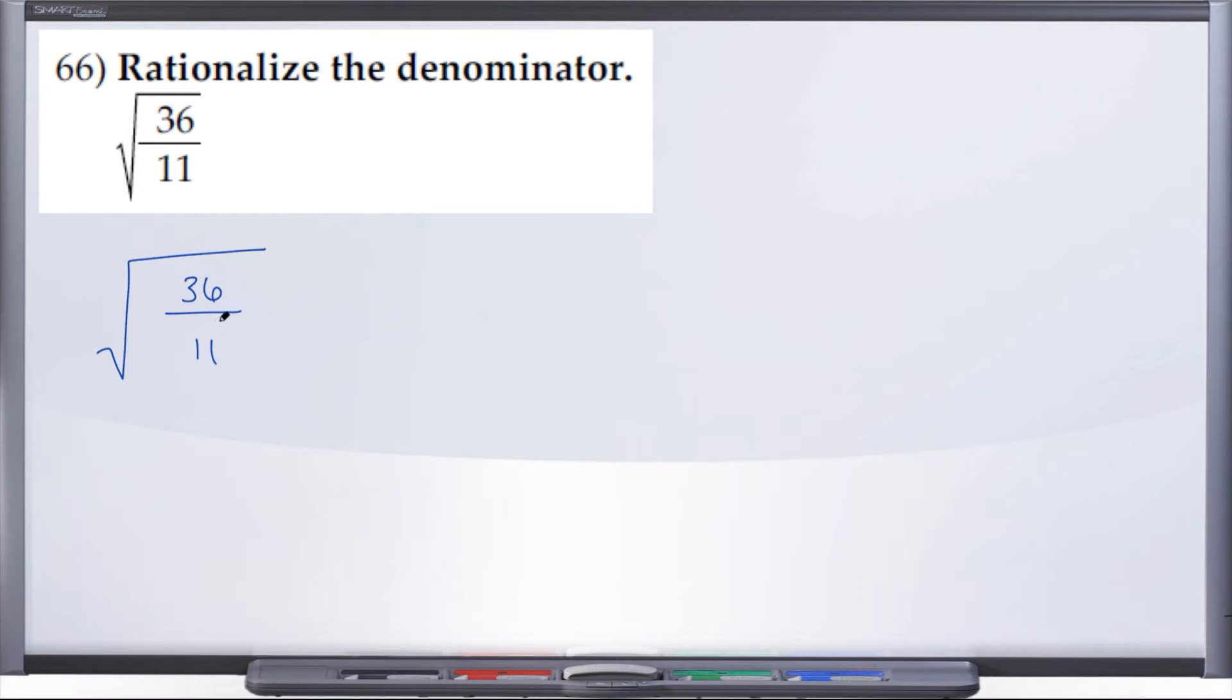You might remember that you can take a single radical like this and rewrite it as two separate radicals. In this case, what we have is, well, what is the square root of 36? That's just 6. Over radical 11. 11 is not a perfect square, so we end up with 6 over radical 11.